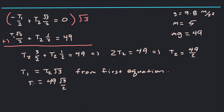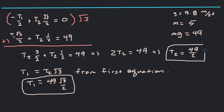So the tension in the first rope, the rope on the left, is 49 times square root of 3 over 2 newtons, and the tension in the rope on the right is 49 over 2 newtons. These are in newtons, which are kilogram meters per second squared. And that's how we find the tension in ropes that have different angles.